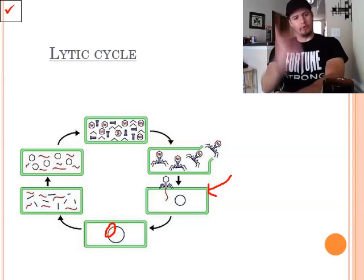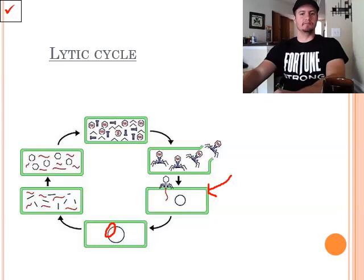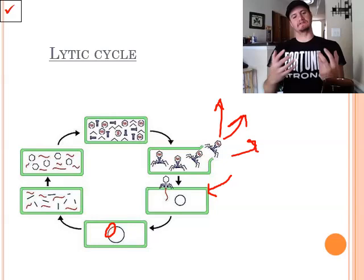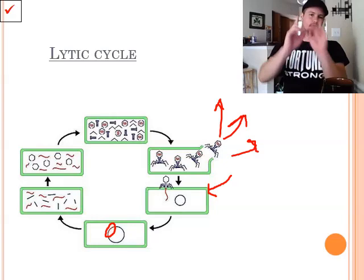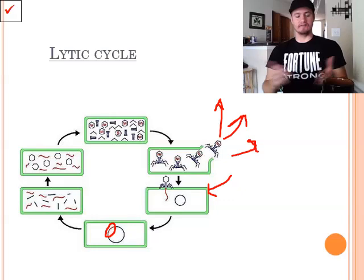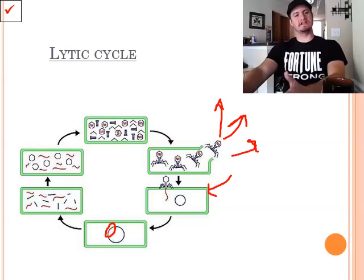So what they do is they make more and more copies of the virus until eventually the cell can't take it anymore. And the cell will actually burst, releasing thousands and thousands of these virus copies to infect other cells. That's why a virus can spread so quickly. Once it infects one cell, it's basically got anywhere between a hundred thousand to even more copies that can go infect more cells. That's how these things can spread so quickly.